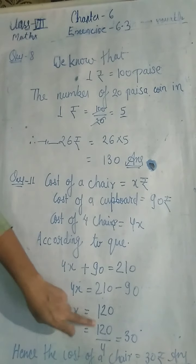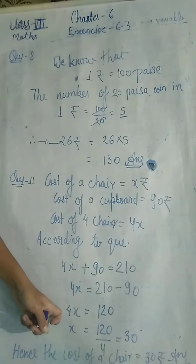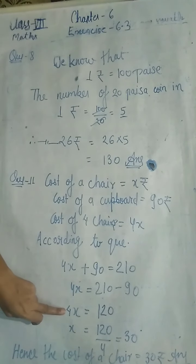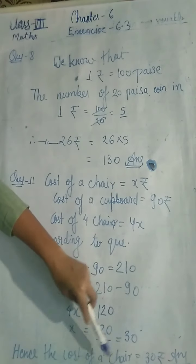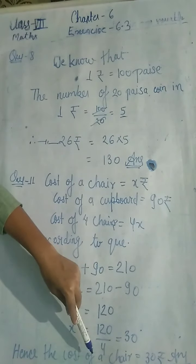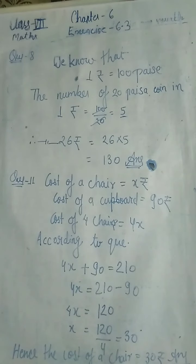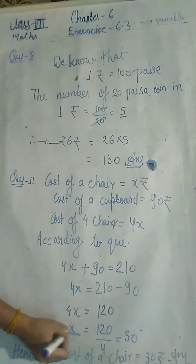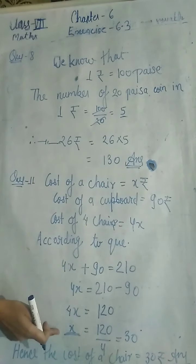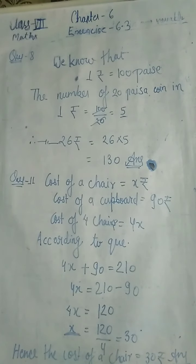4x = 120, toh x = 120 ÷ 4. Kyunki yahan multiply hai, toh divide ho jaayega — yeh maine last class mein bataya tha. 120 divided by 4 = 30. Hence, the cost of a chair is equal to 30 rupees. Kyunki chair ki cost x rupees thi, aur x ki value 30 aayi.